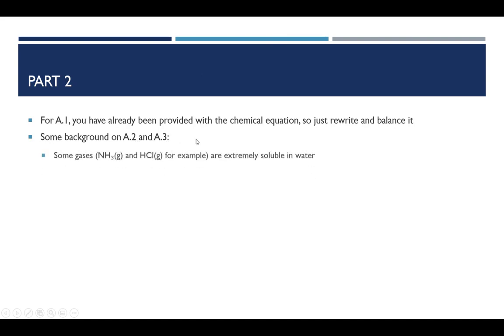Let me give you some guidance on filling out the report sheet for part two. For A1, I already gave you the chemical equation. It was unbalanced. You just need to rewrite it and balance it. One problem with this experiment, as it is, is it really doesn't give you some of the necessary background that you need to answer A2 and A3. So I want to fill those gaps in.